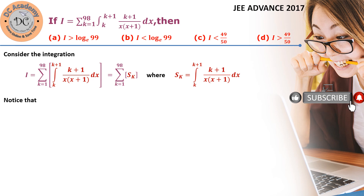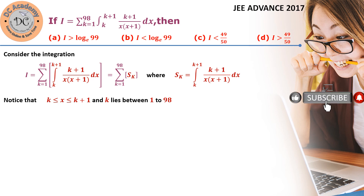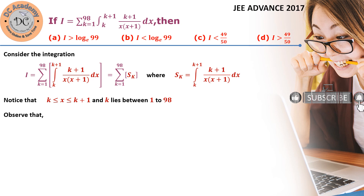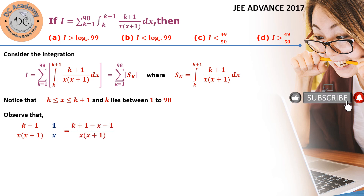Notice that x always lies between k and k+1 for this particular integration sk, and k lies between 1 to 98. Our aim is to generate some bound for sk. We consider the difference between (k+1) and x(x+1), and performing basic arithmetic we see it equals (k minus x) times x(x+1).